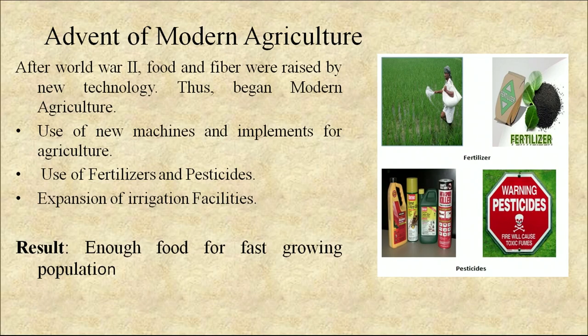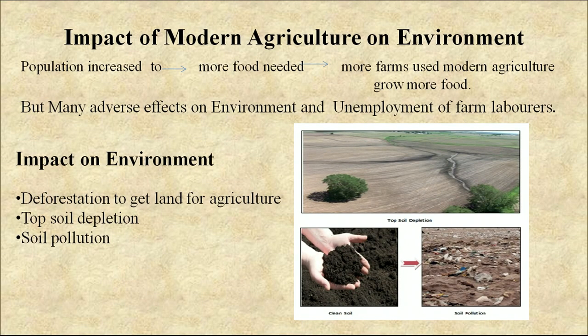Now come to the advent of modern agriculture. After World War II, food and fiber were raised using new technology, and thus began modern agriculture. This included use of new machines and implements for agriculture, use of fertilizers and pesticides, and expansion of irrigation facilities, which resulted in enough food for the fast-growing population. However, as population increased and more food was needed, more farmland was used, which had many adverse effects on environment and also caused unemployment of farm laborers.